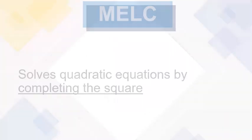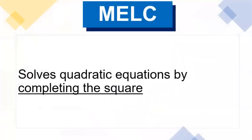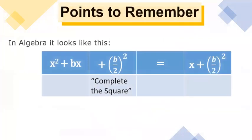Here is our most essential learning competency: solves quadratic equations by completing the square. We also have here some points to remember. In algebra, it looks like this: x squared plus bx plus (b/2) squared is equal to (x + b/2) squared, where (b/2) squared is what we call the completing the square term.